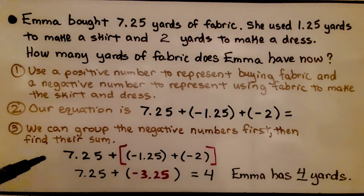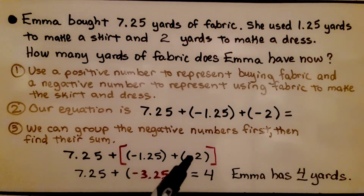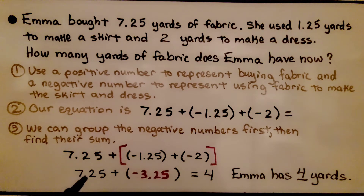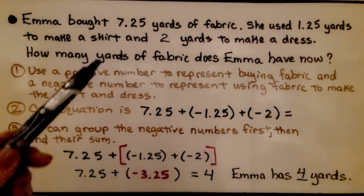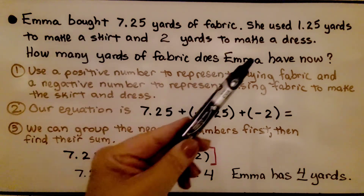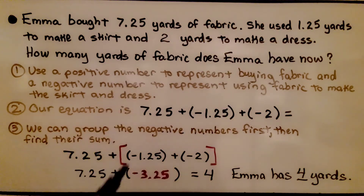We can group the negative numbers first, then find their sum. Negative 1.25 plus negative 2 gives us negative 3.25. Now we add the 7.25 — we find the difference between their absolute values, which is 4, and we take the sign of the greater absolute value, the 7.25, which is positive. We have a positive 4. Emma has 4 yards. Does this make sense? She bought a little over 7 yards and only used a little over 1 and 2 yards — yes, about 4 yards left makes sense.